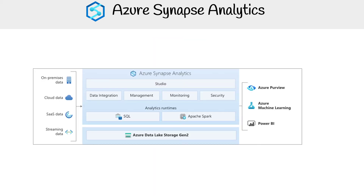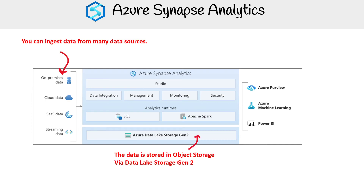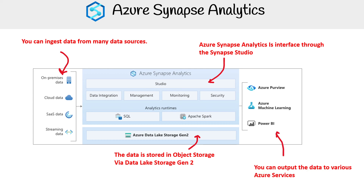To get a better visual of the entire flow: on the left-hand side you're ingesting data from sources, and all the data is going to be stored in Data Lake Storage Gen2. At the top, we have the Azure Synapse Analytics Studio — that's the interface you'll be working with. You can then output to various services, and notice here we have SQL and Apache Spark as the different runtime engines.